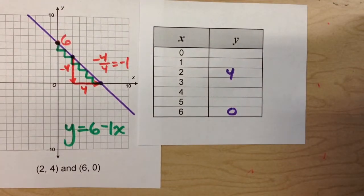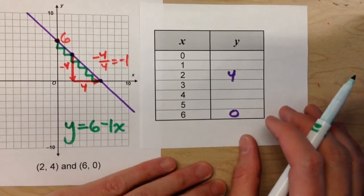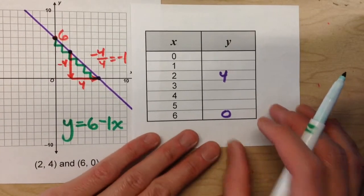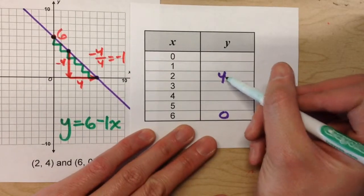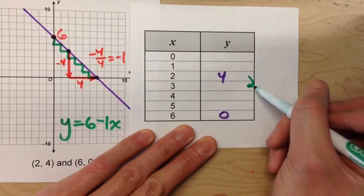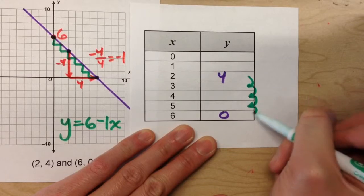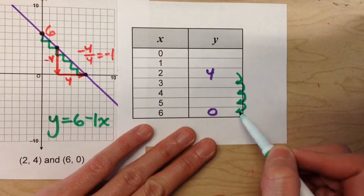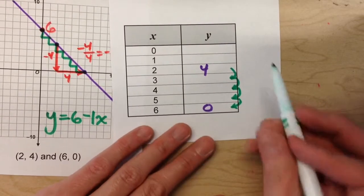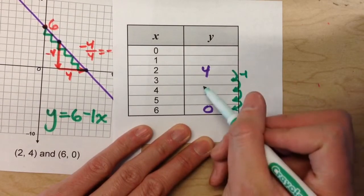Now if we find the pattern of the table, we can find the slope, and then we can use that pattern to figure out the y-intercept. So based on our table here, it went from 4 to 0 in 1, 2, 3, 4 steps. So if it went down 4 in 4 steps, that means it's going down 1 each step.